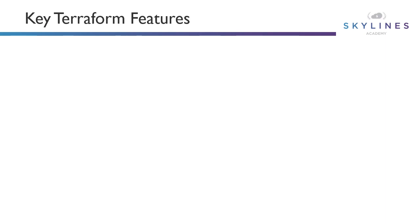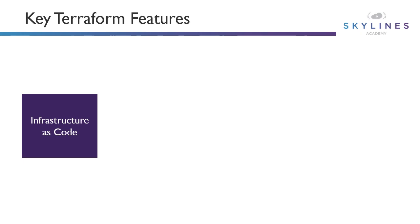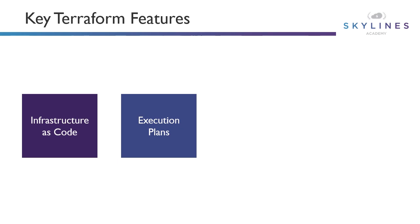Looking at some key features of Terraform — first and foremost, as you will hear throughout this course, is infrastructure as code. Infrastructure is described using the high-level configuration syntax, the Terraform language, and this allows a blueprint of your data center to be versioned and treated as you would any other code. The infrastructure can also be shared and reused. Then there are execution plans — Terraform has a plan step where it generates an execution plan showing what Terraform will do when you call the apply command.